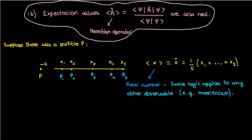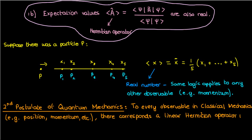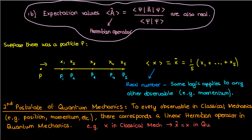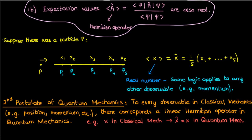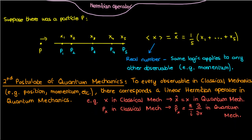So is it possible that measurable quantities — observables — are related to Hermitian operators? Yes it is. In fact, this is the second postulate of quantum mechanics: that to every observable in classical mechanics there corresponds a linear Hermitian operator in quantum mechanics. For example, the position quantity x in classical mechanics has a corresponding Hermitian operator x-hat equals x in quantum mechanics. Similarly, the x-momentum in classical mechanics has a corresponding Hermitian operator p_x-hat given by h-bar over i times the partial derivative with respect to x, where h-bar is Planck's constant h divided by 2 pi.